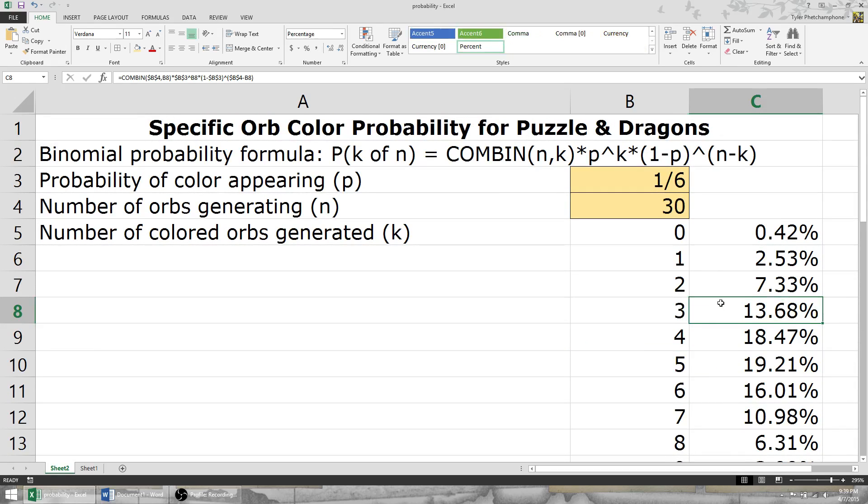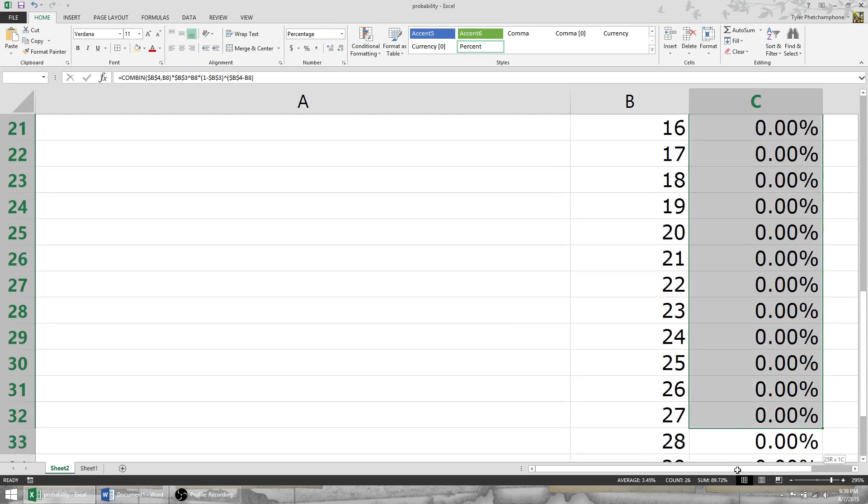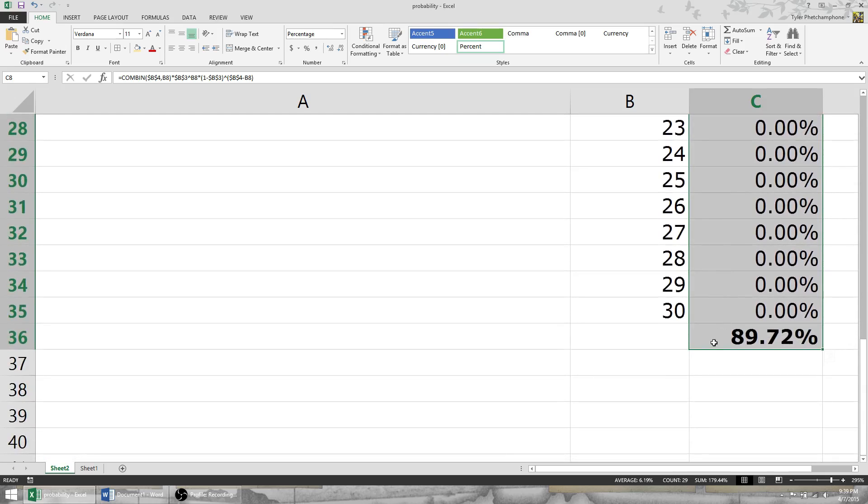Let's say in our example, we want to know what's the percent chance of us being able to at least make a match of three. So we'll highlight three, scroll all the way down. So this is the percent chance of generating three or more light orbs on a new board.